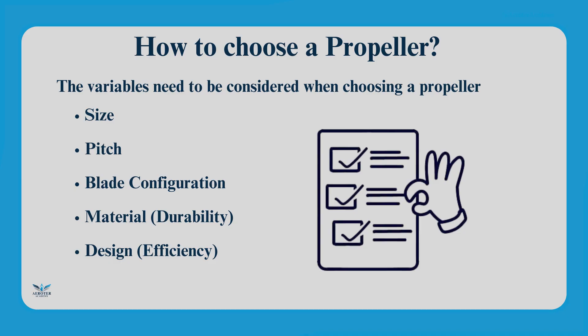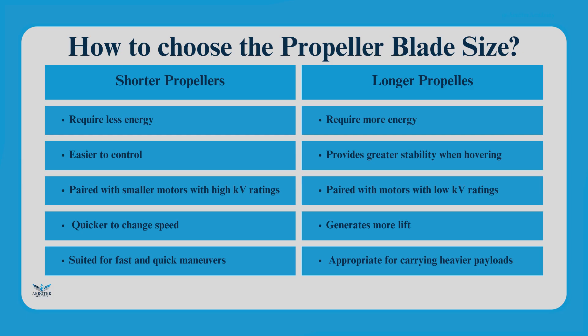Choosing the right propeller is crucial. Here are the key factors to consider. Size: propeller size is measured in inches and describes the diameter of the circle the blades make as they rotate. Shorter propellers require less energy, are easier to control, are paired with smaller motors with high KV ratings, are quicker to change speed and are suited for fast and quick maneuvers. Whereas longer propellers require more energy, provide greater stability when hovering, are paired with motors with low KV ratings, generate more lift and are appropriate for carrying heavier payloads.